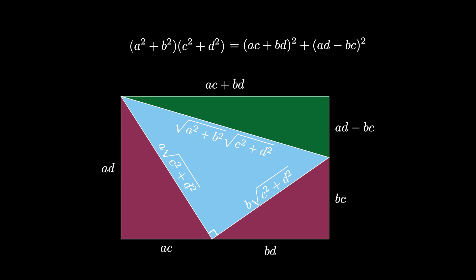If we square the left side, we get the resulting formula that the quantity A squared plus B squared times the quantity C squared plus D squared equals the quantity AC plus BD squared plus the quantity AD minus BC squared.